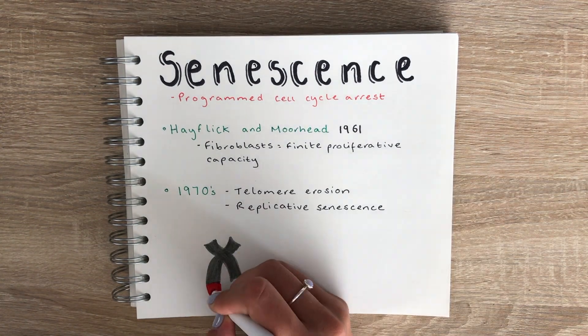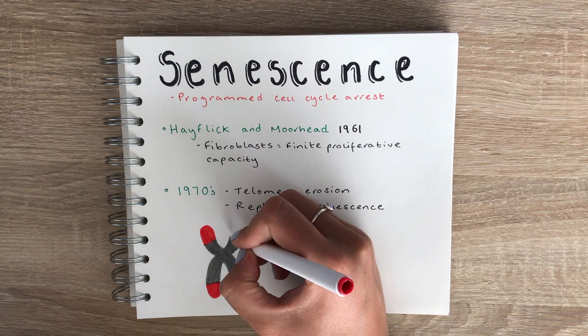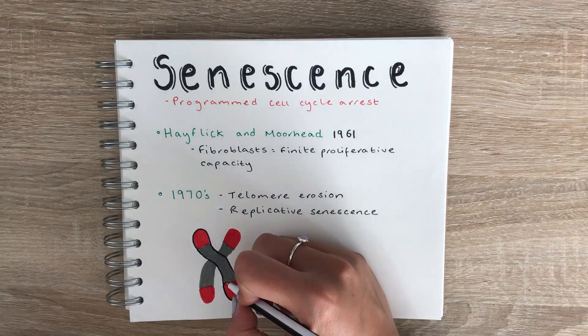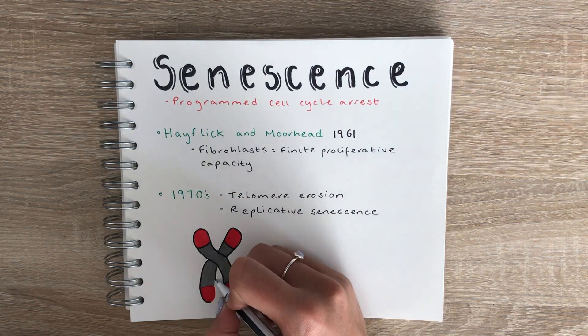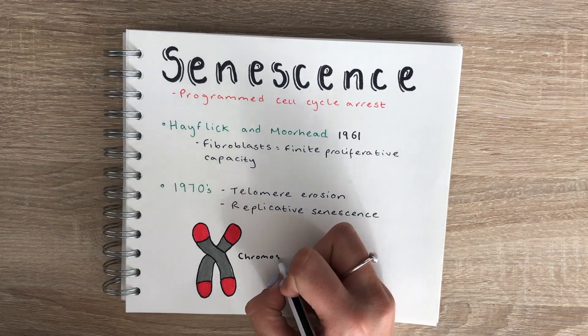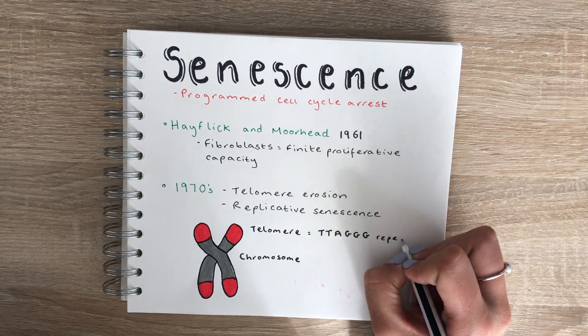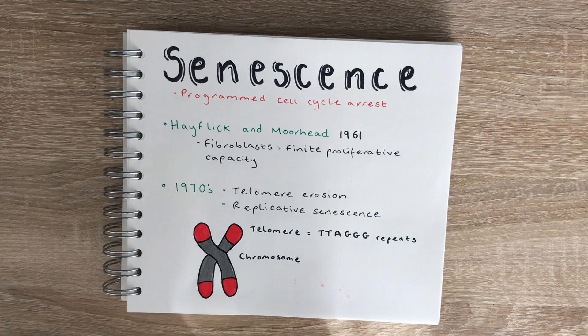For a cell to divide it must first make a new copy of all the genetic material which is stored in the chromosomes. The end regions of our chromosomes are known as telomeres, and these are regions of non-coding TTAGGG repeats that act as a kind of protective cap at the end of the chromosome.